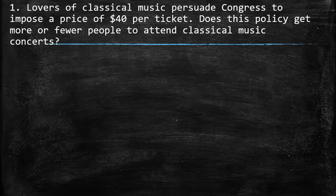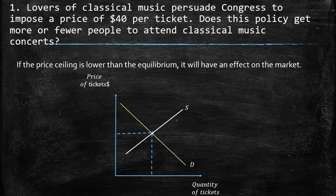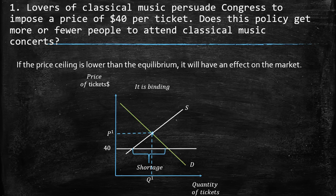The first question says: lovers of classical music persuade Congress to impose a price ceiling of $40 per ticket. Does this policy get more or fewer people to attend classical music concerts? We have to clarify that if the price ceiling is lower than the equilibrium, it will affect equilibrium in the market. This is going to be the price ceiling, which is the maximum price.